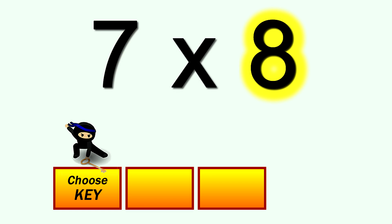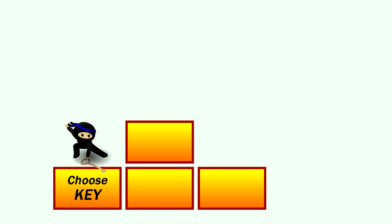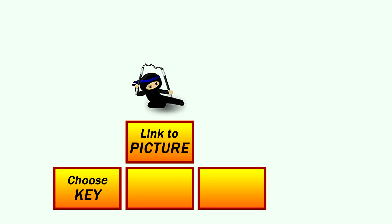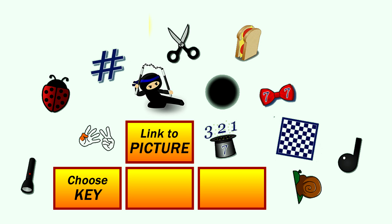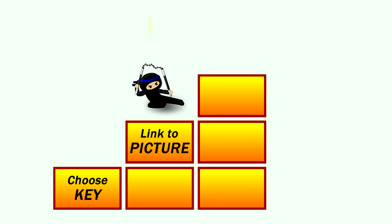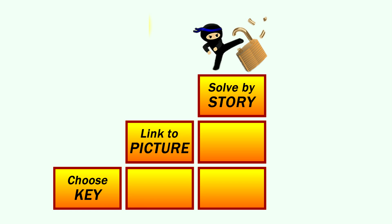Here we go, this is how it works. It's a simple three-step process. The first step with any multiplication is to spot the fastest key to solving the problem. It'll be one of the numbers in the problem or the x in the middle. The second step is to link the key you chose to its special picture. And lastly you just use the story related to the picture to get quickly and easily to the answer.